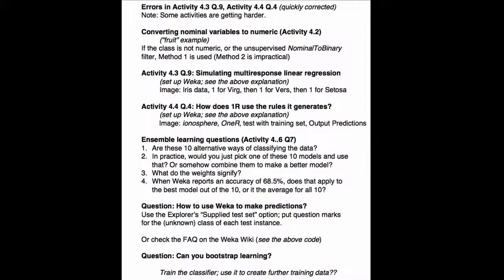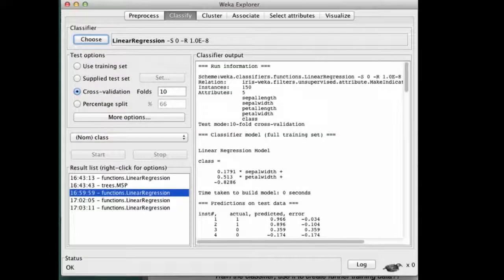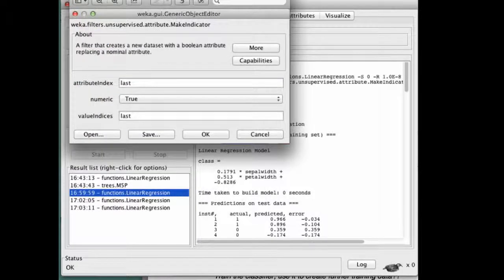Okay. The next question is about simulating multi-response linear regression. Please explain. Well, we're looking at a Weka screen like this. We're running linear regression on the Iris data set, where we've mapped the values so that the class for any Virginica instance, the class is 1 and 0 for the others. And then we do that, so we've done it with this kind of configuration. This is the default configuration of the Make Indicator filter. It's working on the last attribute, that's the class. And in this case, the value index could be, well, in this case it's last,